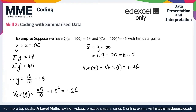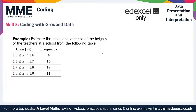Finally, Skill 3 is coding with grouped data. We code the midpoints and calculate all sums using the coded midpoint, then convert back at the end. In this example, we estimate the mean and variance of teachers' heights. The midpoints are 1.55, 1.65, 1.75, and 1.85. A suitable coding is y equals (x − 1.55) over 0.1.